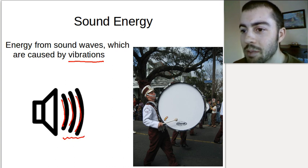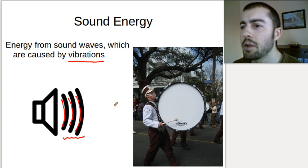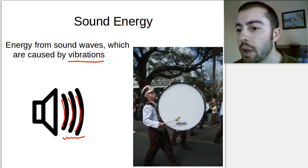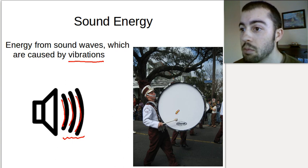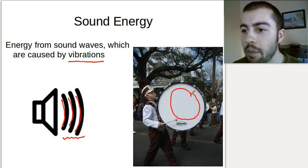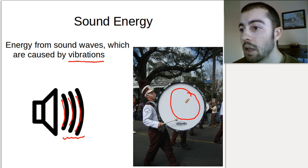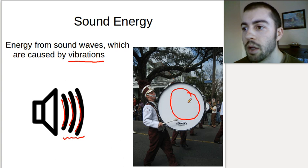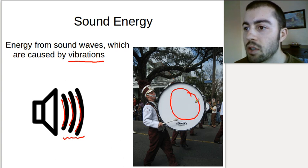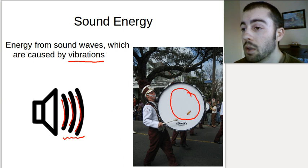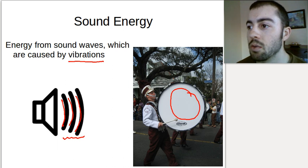If we look at this drummer, he's beating the drum with his mallet. He's swinging the mallet with kinetic energy because it's moving, and then he hits the drum membrane. The membrane vibrates back and forth, which produces sound waves — sound waves come from vibrations. So the vibrations of this drum membrane are what cause the sound energy. Here we're converting kinetic energy into sound energy.